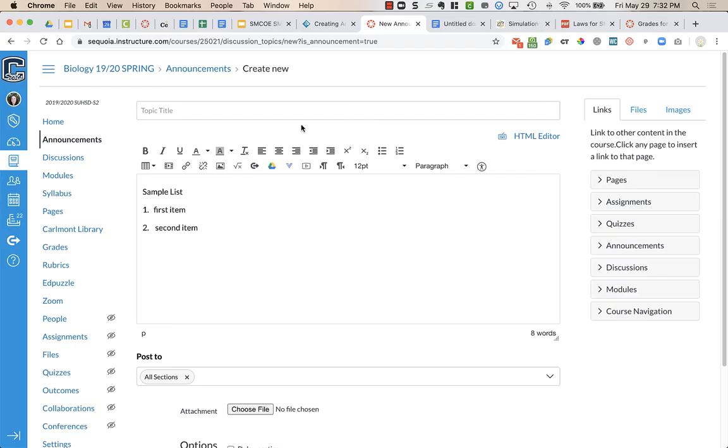So right now, I am in a Canvas announcement. And in Canvas, you will see this rich text editor. You'll see it in announcements, assignments, discussions, pretty much everywhere on Canvas. When you are typing things in, you have this editor.